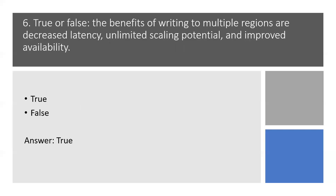Question 6. True or false? The benefits of writing to multiple regions are decreased latency, unlimited scaling potential, and improved availability. True. As we know, Azure has 58 regions all over the world and Azure is available in 140 countries. Writing to multiple regions has many performance benefits — for example, the latency for write operations is less than in non-multi-master accounts.